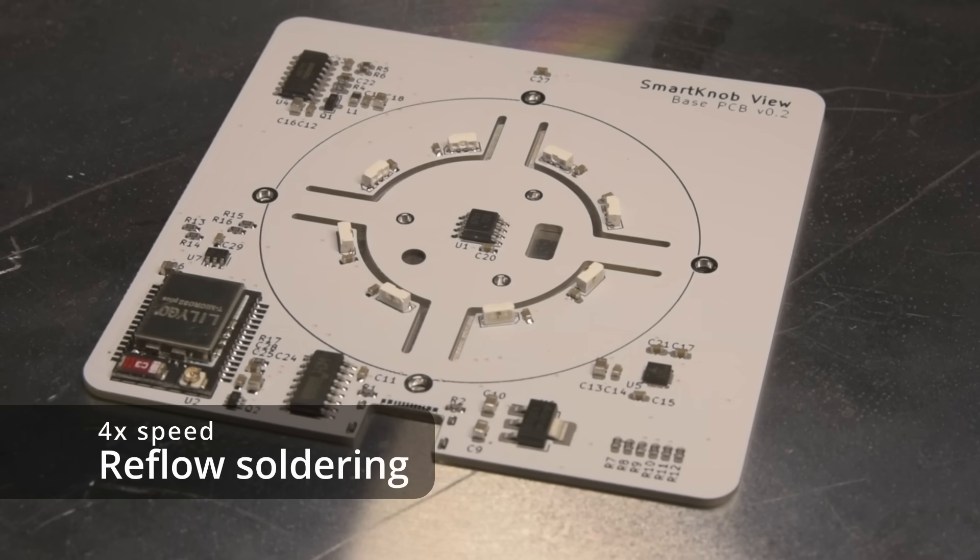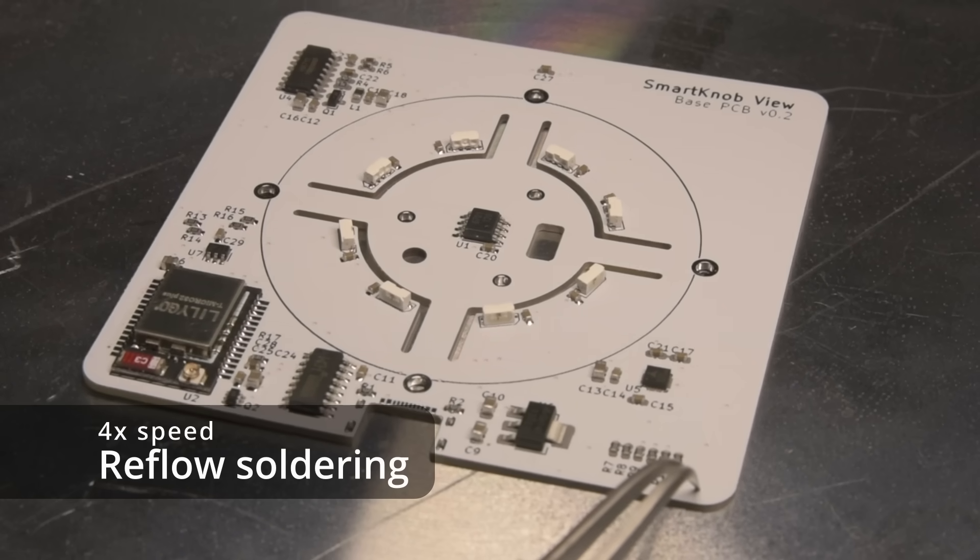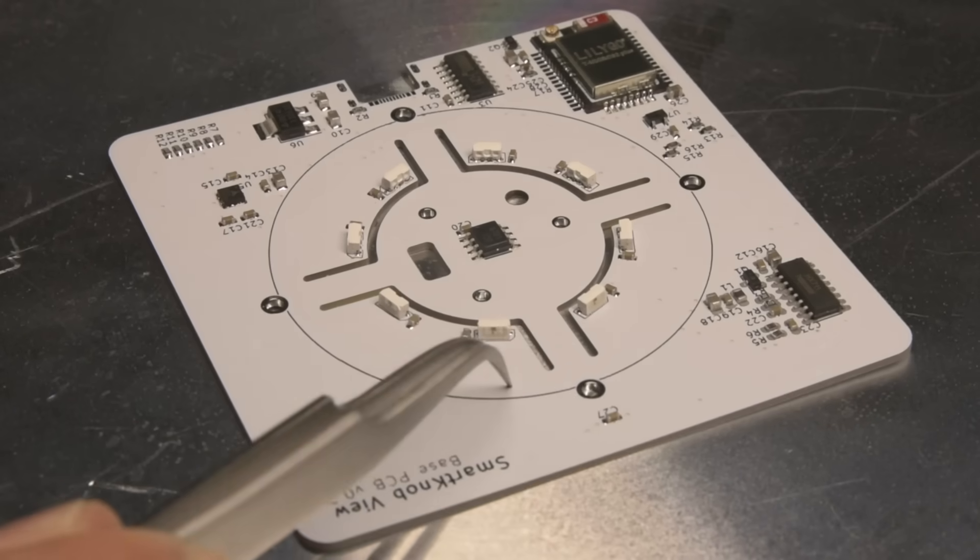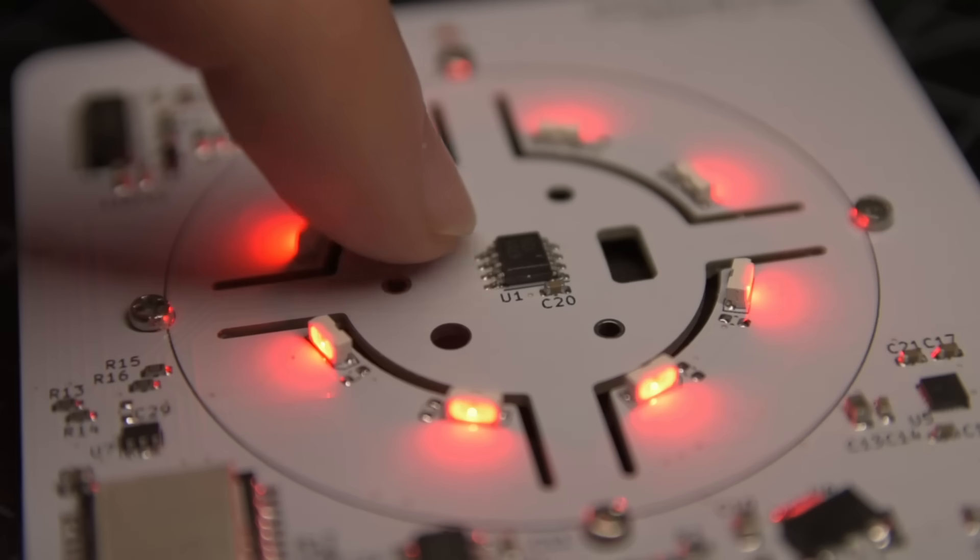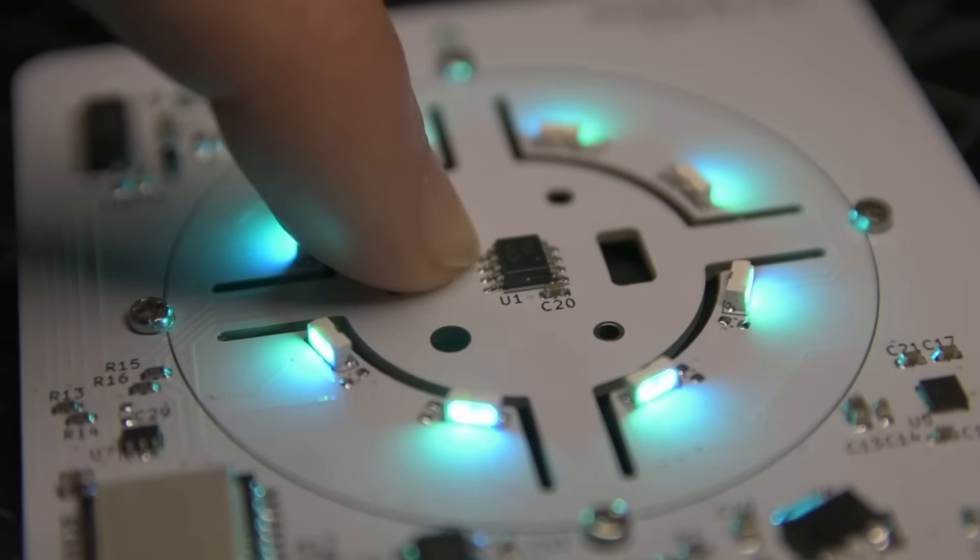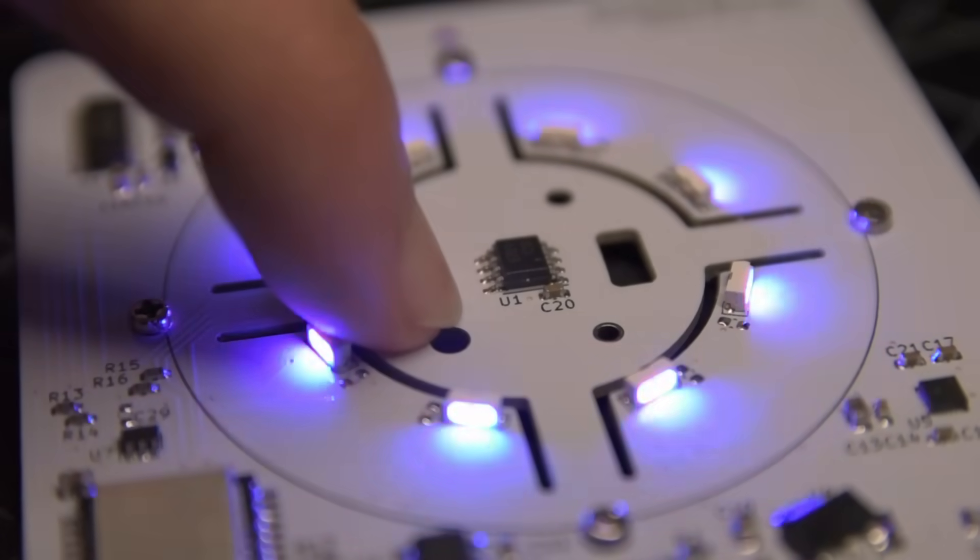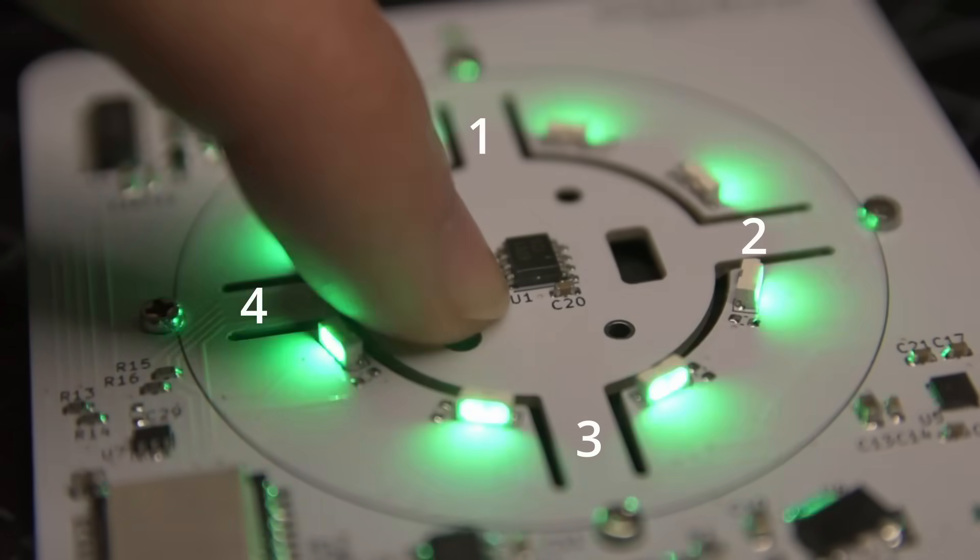Now, remember how I said this PCB has a weird flex? And maybe you noticed that there are interesting slots cut out of the PCB around the motor? That's because the entire motor mount on the PCB is designed to bend, ever so slightly, when you press in on the knob, supported by these four thin spokes. This way you can press the knob to click through menus or confirm a selection.